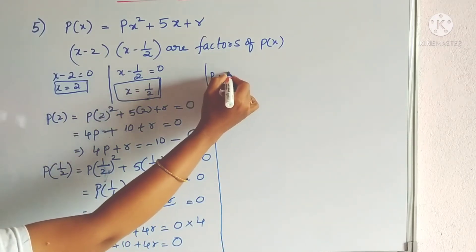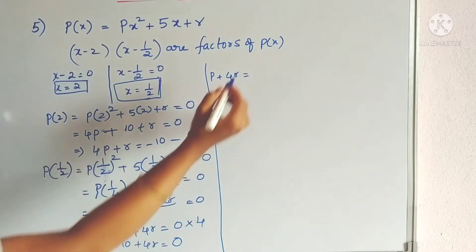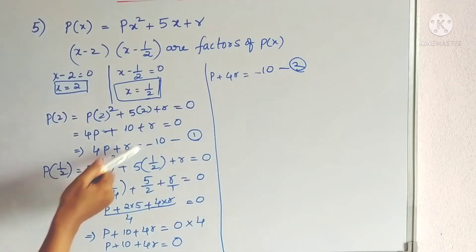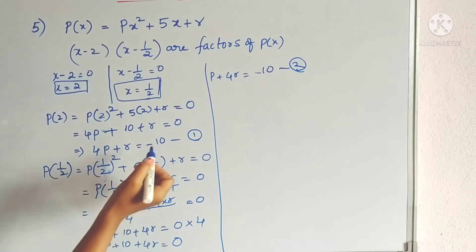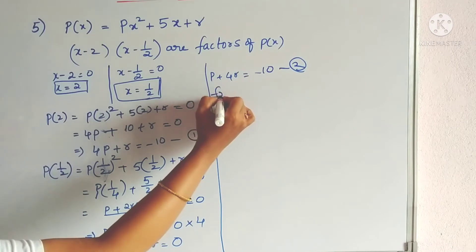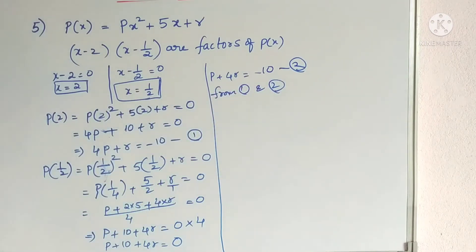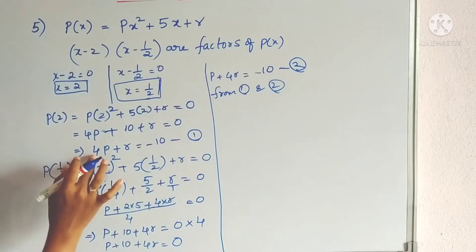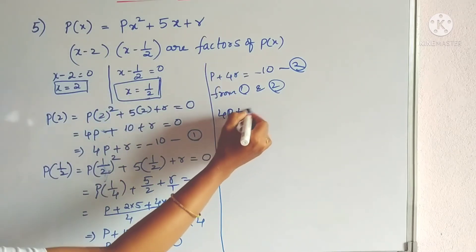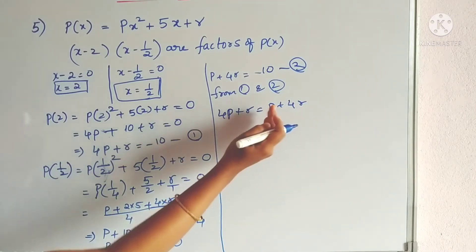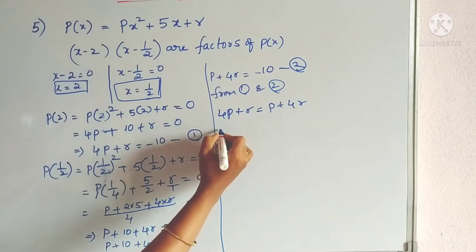Transposing the constant 10 to the RHS: p + 4r = −10. Let this be equation 2. Now observe equations 1 and 2 — both RHS values equal −10, so the LHS values are also equal: 4p + r = p + 4r.